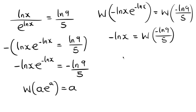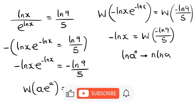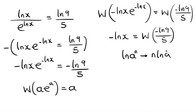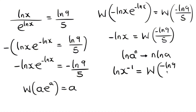Now, applying the law of logarithms in reverse: the negative 1 coefficient in front of ln(x) can become a power, so −ln(x) becomes ln(x^(−1)). Therefore the equation becomes ln(x^(−1)) = W(−ln(9)/5).